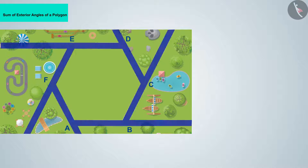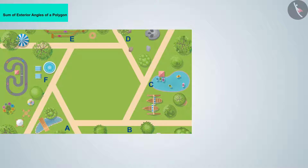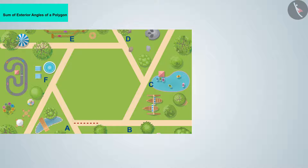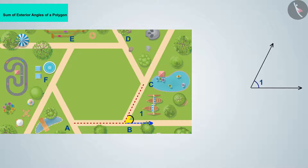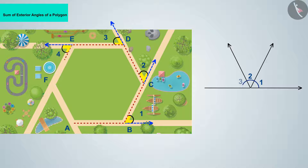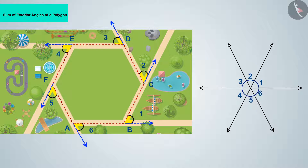Suppose you are in a hexagonal garden. You start from vertex A and move once in the anti-clockwise direction along the boundary. As soon as you reach B, you rotate at angle 1 and move towards BC. At C, you rotate angle 2 and move towards CD. Continue this process until you return to vertex A, displaying the angle formed each time on the right.